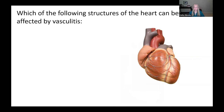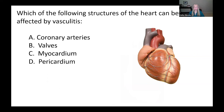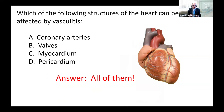Which structures of the heart can be affected by vasculitis — the coronary arteries, the valves, the myocardium, or the pericardium? The answer is all of them. The coronary arteries supply the heart muscle. The valves help direct blood flow. The myocardium is the muscle of the heart itself. The pericardium is the sac enveloping the heart. All these structures can be affected by vasculitis, and we often look for vasculitis affecting these structures in our patients.